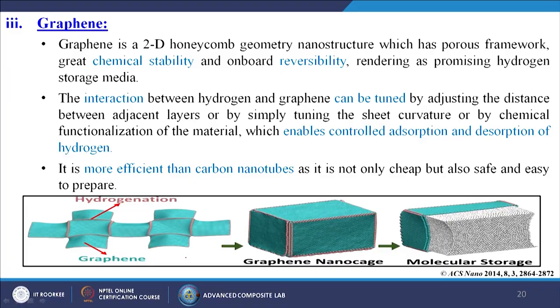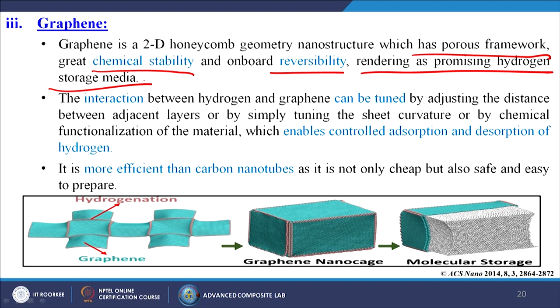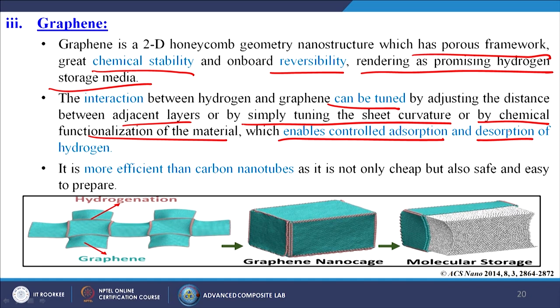Next is graphene — it also comes from graphite. Graphene is a 2D honeycomb geometry nanostructure which has a porous framework, great chemical stability, and on-board reversibility, rendering it a promising hydrogen storage medium. The interaction between hydrogen and graphene can be tuned by adjusting the distance between adjacent layers, by tuning the sheet curvature, or by chemical functionalization, which enables controlled adsorption and desorption of hydrogen. It is more efficient than carbon nanotubes as it is not only cheap but also safe and easy to prepare. We can do hydrogenation or use graphene nano-cages where hydrogen gas can be stored inside like a box.